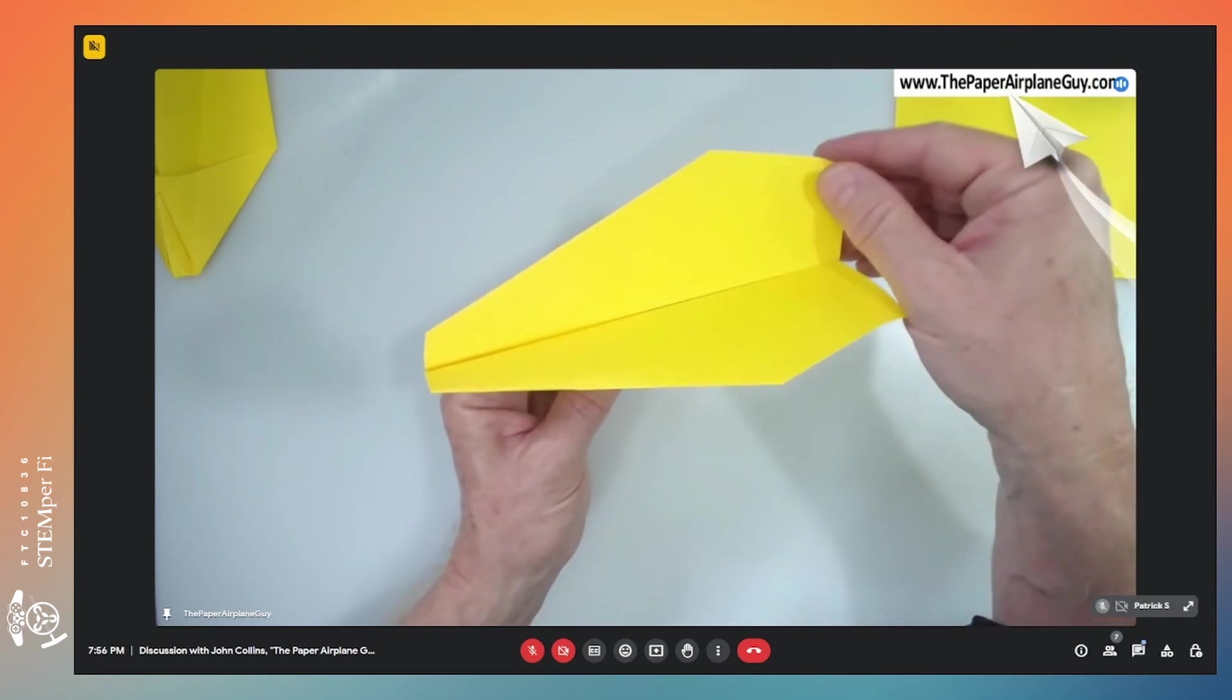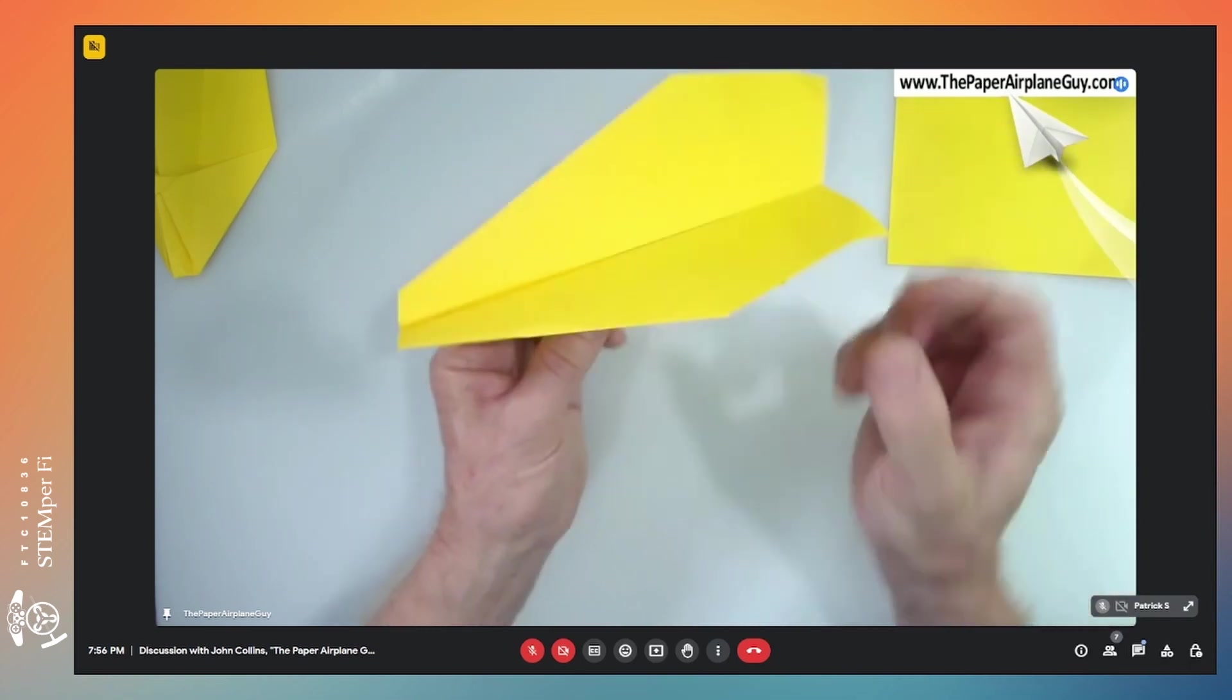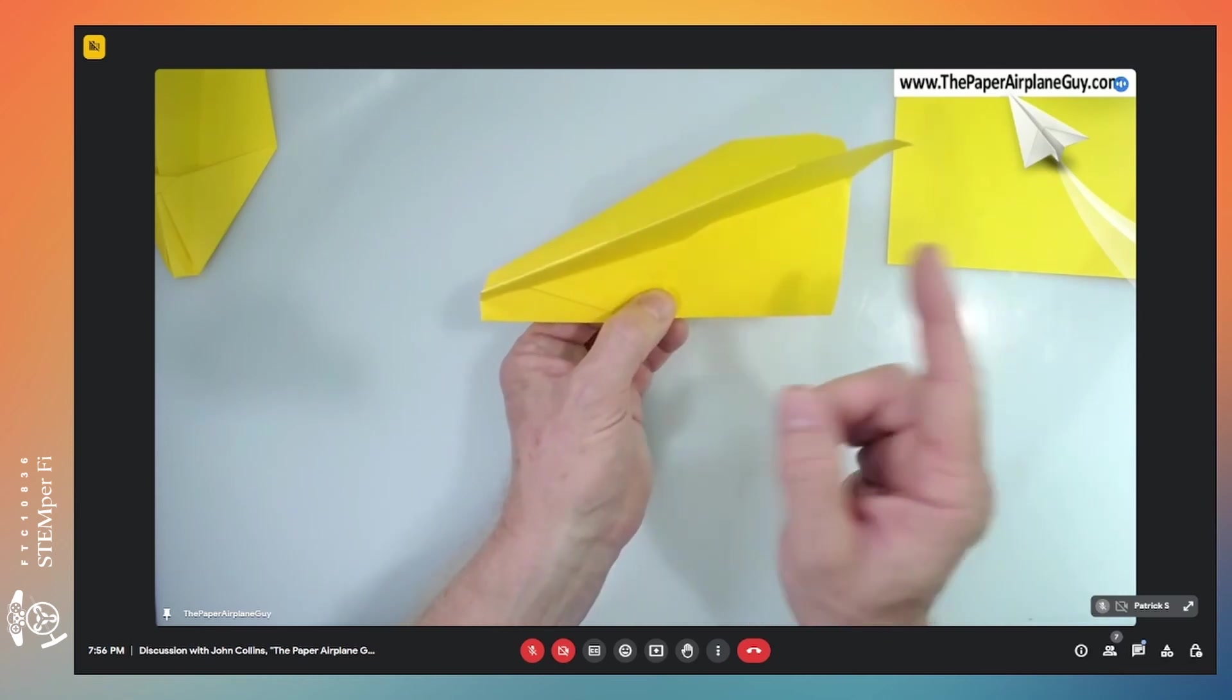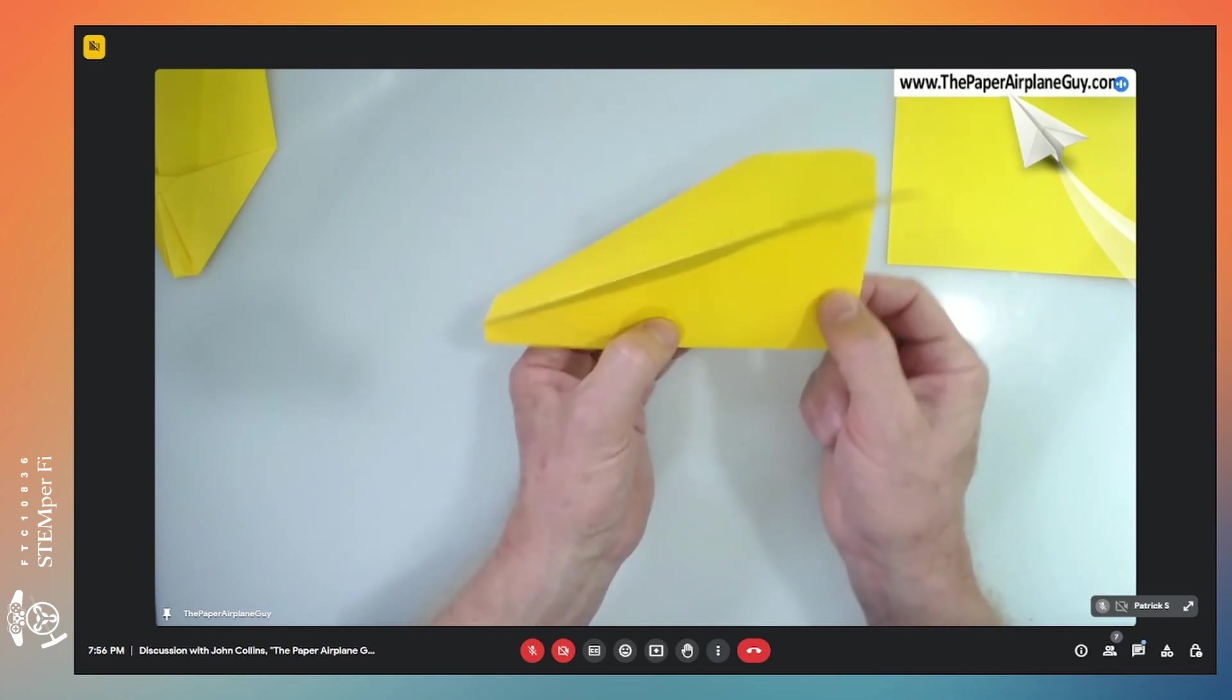In the same way, if I bend those down, now the tail gets pushed up because air is bouncing off of that pushing the tail up and the nose goes down.